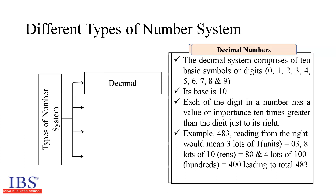The decimal system comprises 10 basic symbols or digits: 0, 1, 2, 3, 4, 5, 6, 7, 8, and 9. The base of the decimal number system is therefore 10. Each digit in a number has a value 10 times greater than the digit just to its right. For example, 483 in the decimal number system, reading from right, means 3 lots of 1 units equal to 3, 8 lots of 10 equal to 80, and 4 lots of 100 equal to 400, totaling to 483.